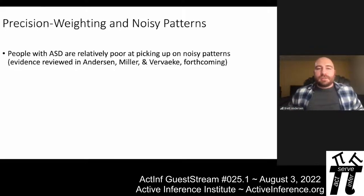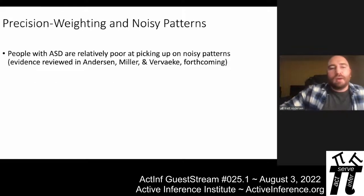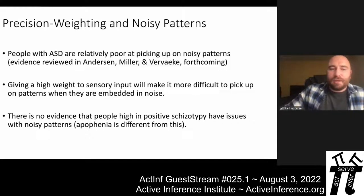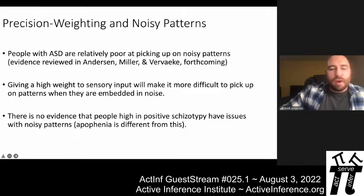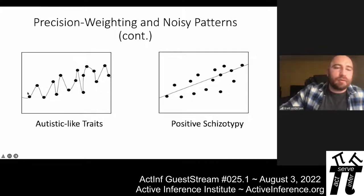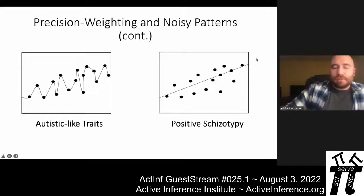People with autism spectrum conditions are relatively poor at picking up on noisy patterns. I review this evidence in an upcoming paper with John Brevicki and Mark Miller. If you're giving a high weight to sensory input, it's more difficult to pick up on patterns embedded in noise — if you try to fit your model very precisely to noisy data, you miss the underlying pattern through overfitting. There is no evidence that people high in positive schizotypy have issues with noisy patterns; they ought to be better at detecting noisy patterns because they don't miss the big picture by paying too much attention to details.